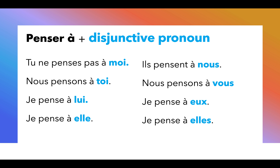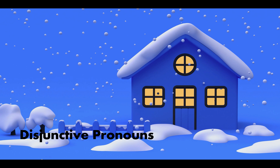Let's look at what it would look like with all of the pronouns and all of the subjects. Tu ne penses pas à moi — you don't think about me. Nous pensons à toi — we're thinking about you. Je pense à lui — I think about him. Je pense à elle — I think about her. Ils pensent à nous — they think about us. Nous pensons à vous — we think about you. Je pense à eux — I think about them. Je pense à elles — I think about them. That is the end. Thank you for watching.